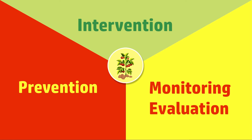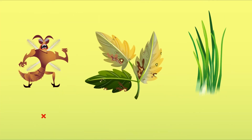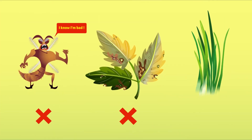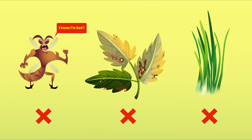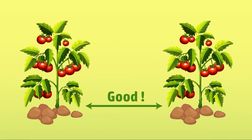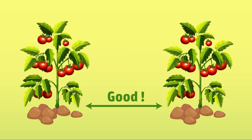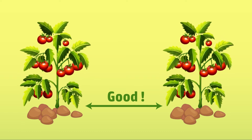IPM consists of three main pillars: prevention, monitoring and evaluation, and intervention. As a first step, maximum effort should be made to prevent problems with pests, diseases, and weeds to avoid the need for intervention. Examples include rotation of crops according to a predefined crop rotation program, and ensuring optimal plant spacing or plant density.